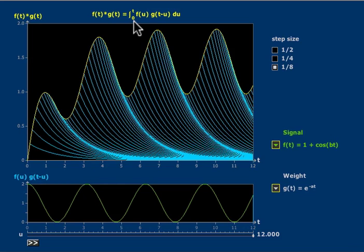The contribution from time u decays by the factor of g(t - u) by time t. So the contribution from time u to time u + du is given by the product f(u), the signal at time u, times g(t - u), the weight function evaluated at t - u, times du.